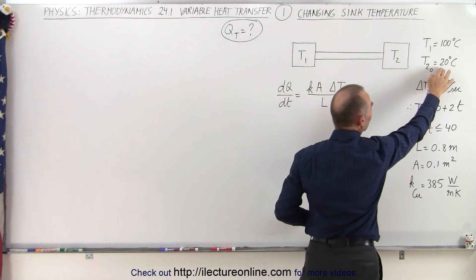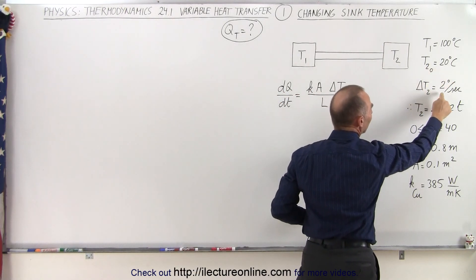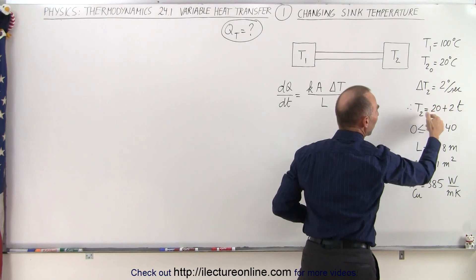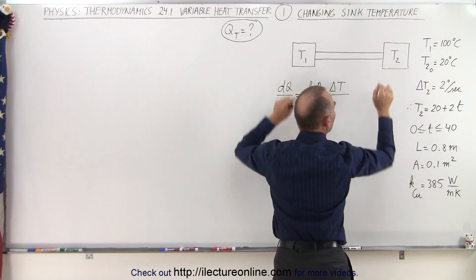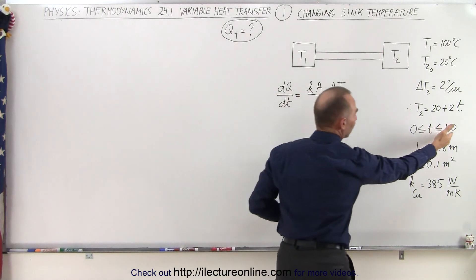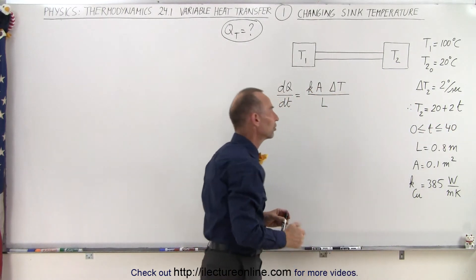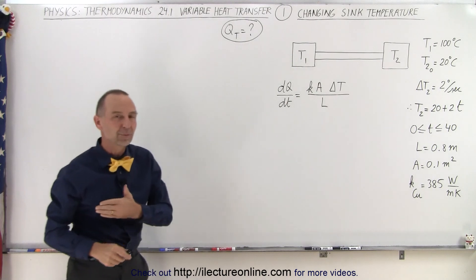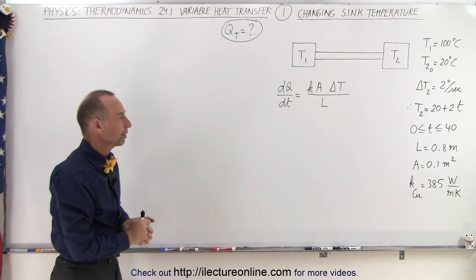It starts at 20 degrees centigrade and increases at a rate of 2 degrees per second until the two temperatures are equal to one another. So that would take about 40 seconds for T2 to reach 100 degrees. So how much heat has been transferred during that 40-second period.